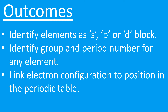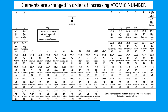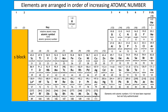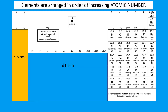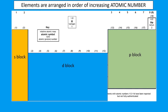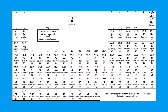Let's look at the periodic table. Elements are arranged in order of their increasing atomic number — from hydrogen at 1, helium at 2, lithium 3, beryllium 4, and so on. They go in order of atomic number, not mass number. The first two groups on the left are called the s block. The block in the middle is the d block, and the block on the right is known as the p block.